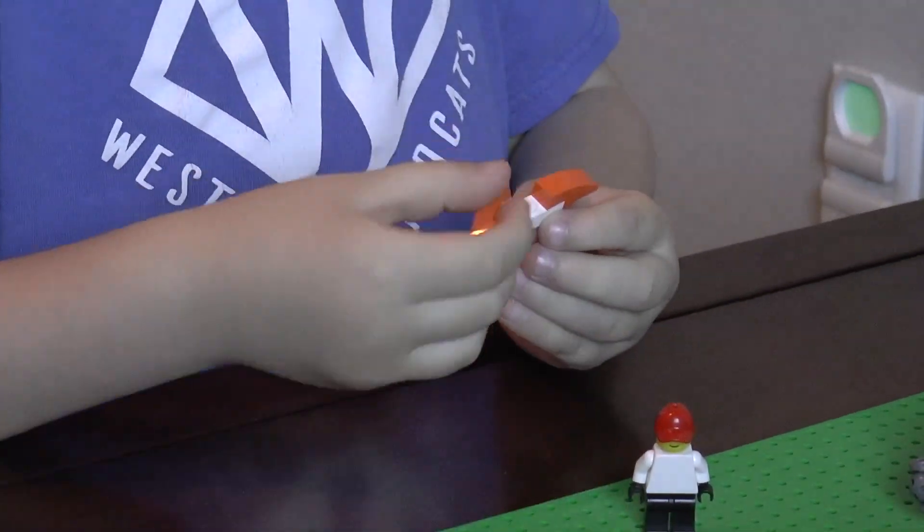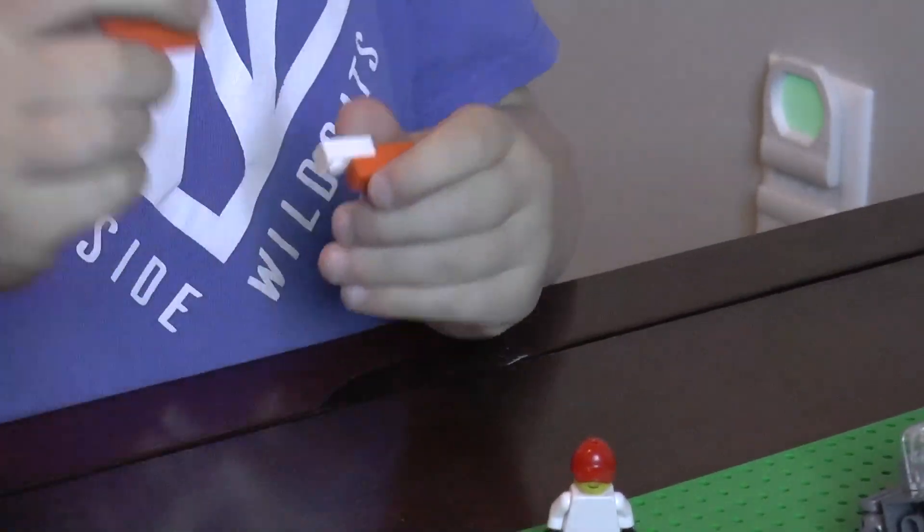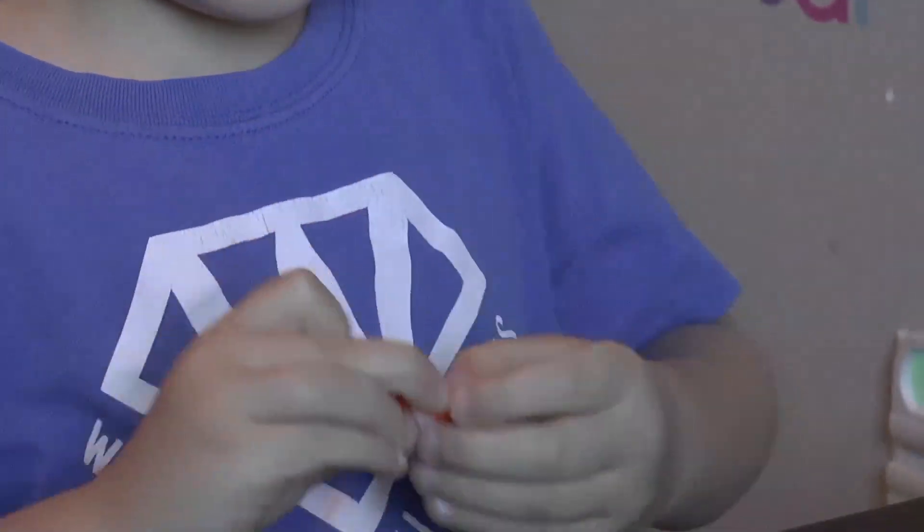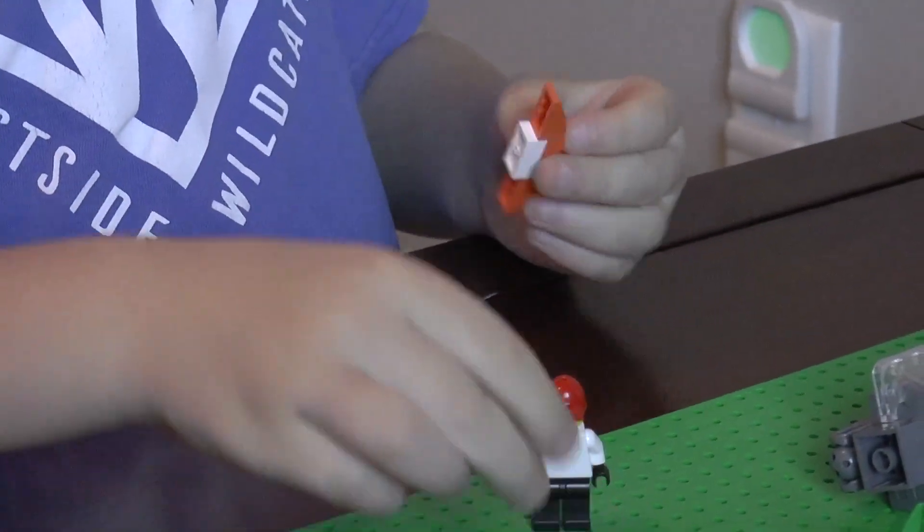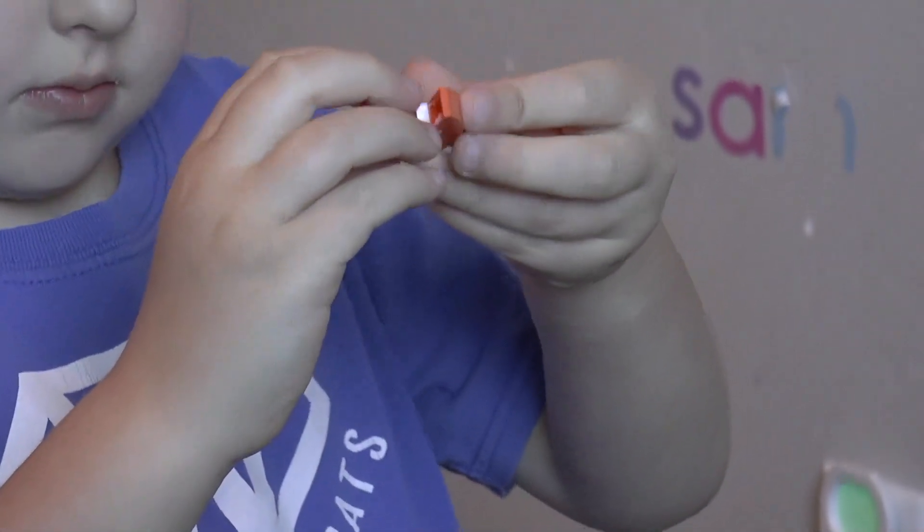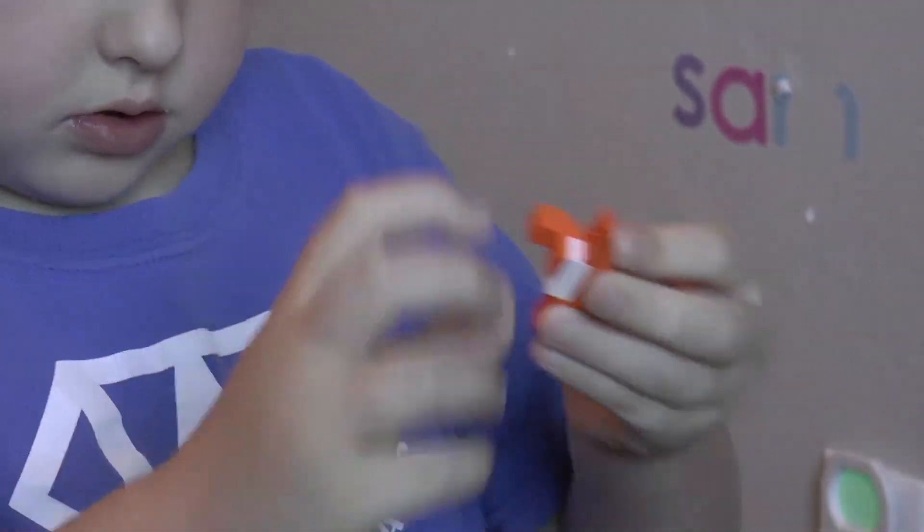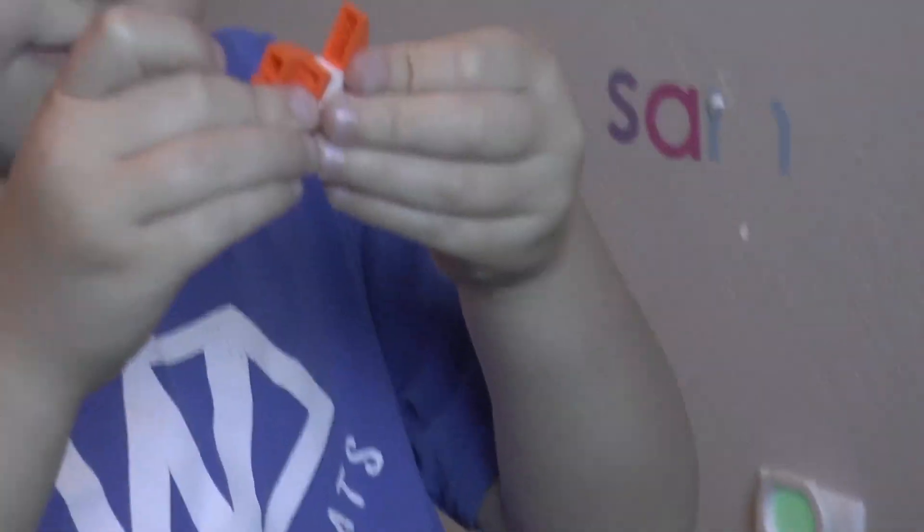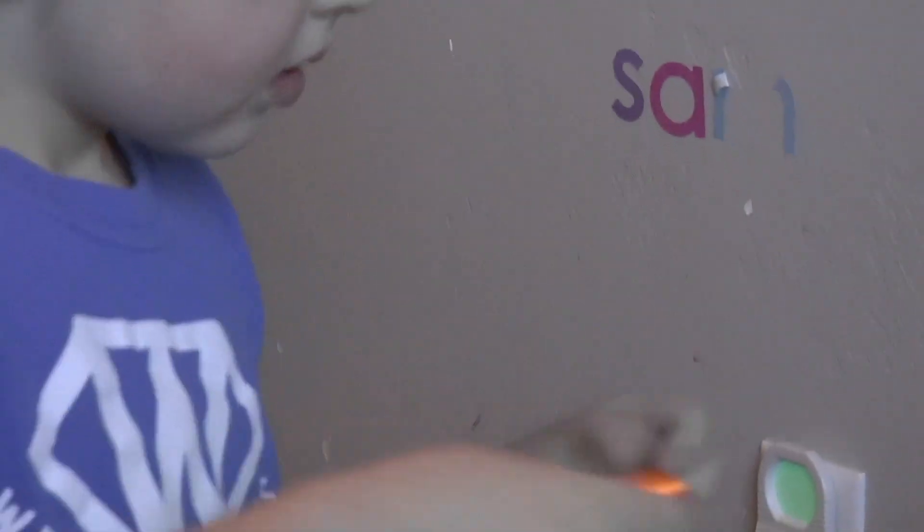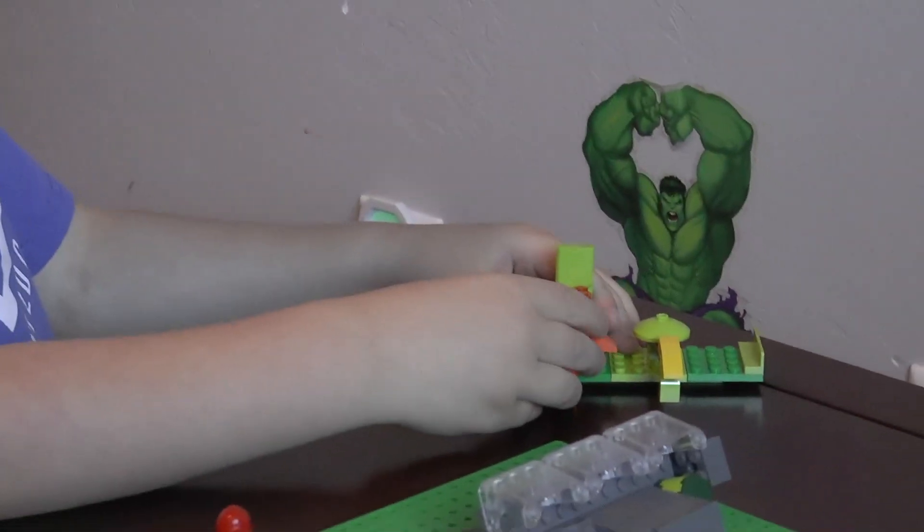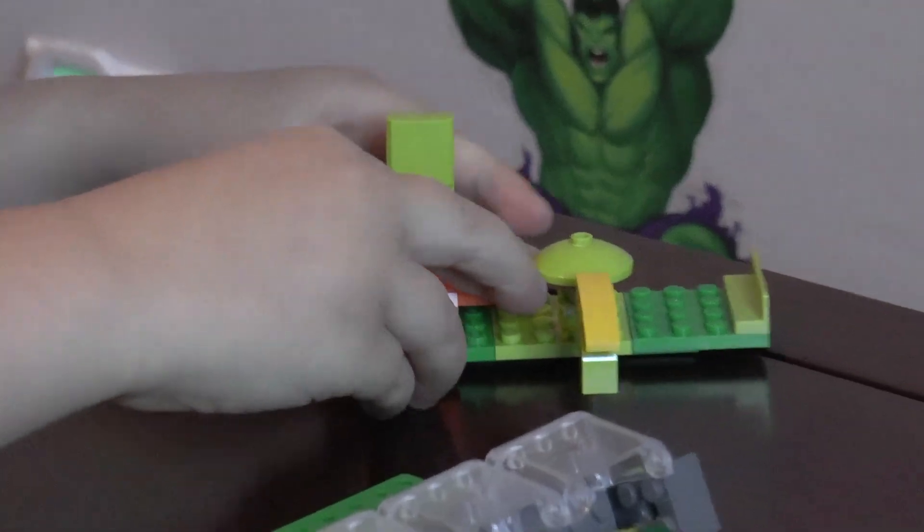And then we're going to need another one of these hands. And we're going to need one foot. And then the second foot. And there we're done with Trapinch. But first we have to put this here.